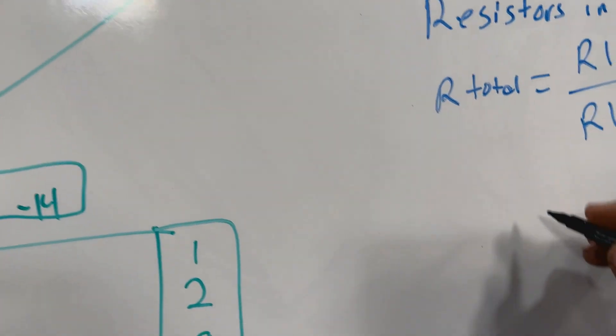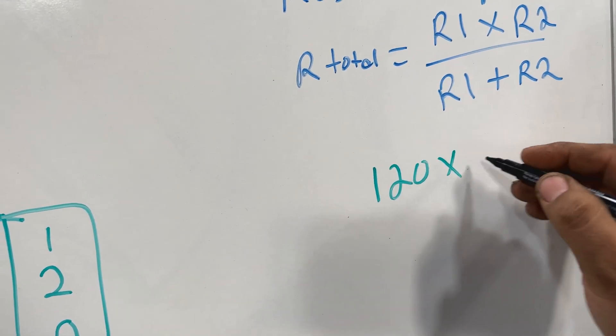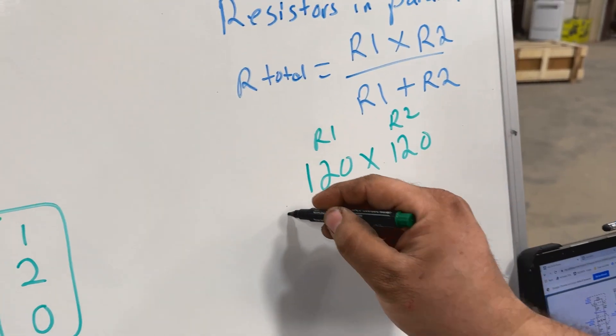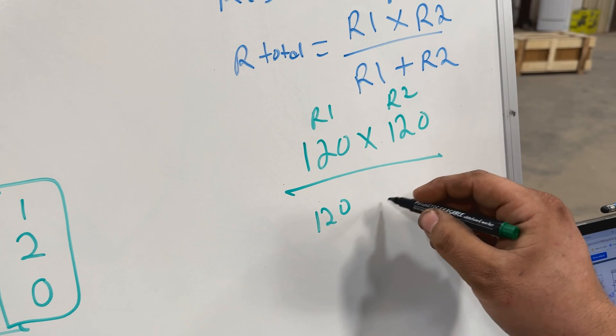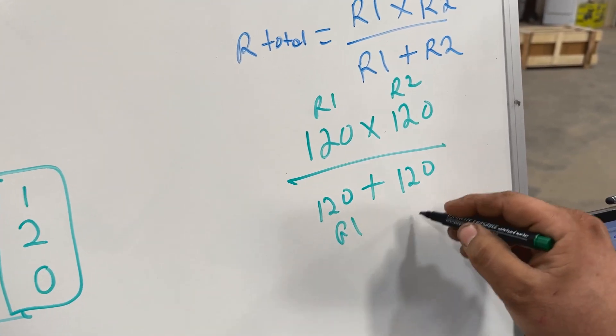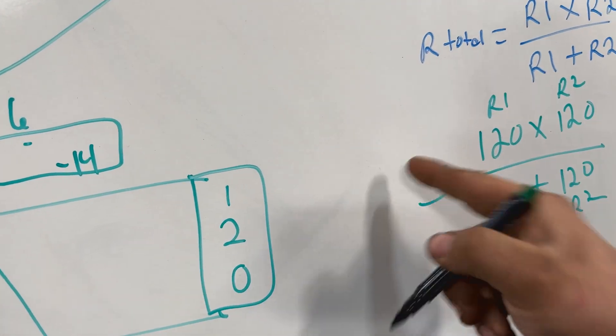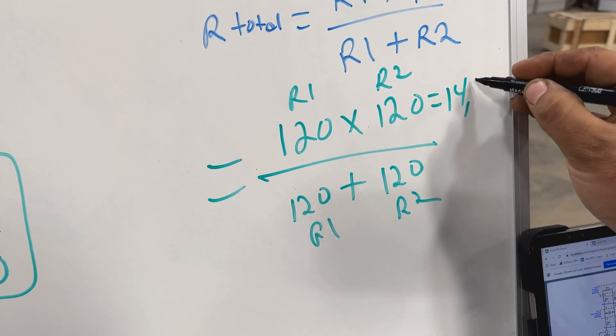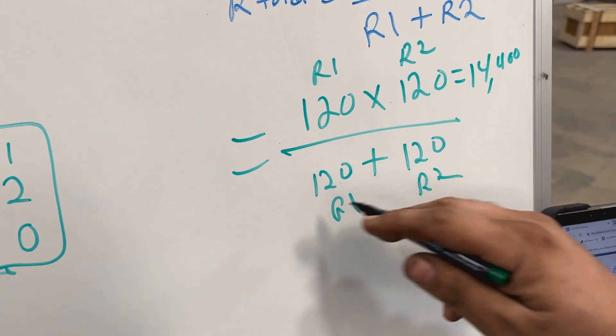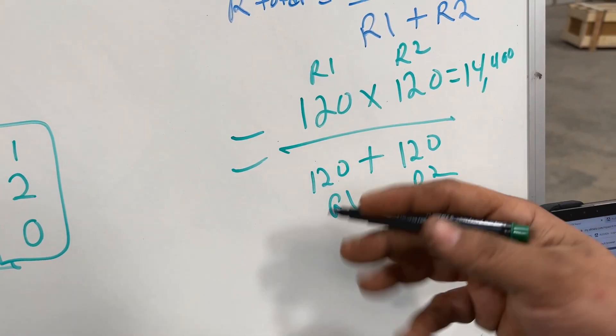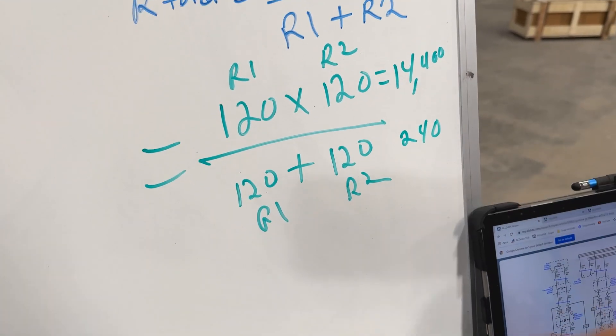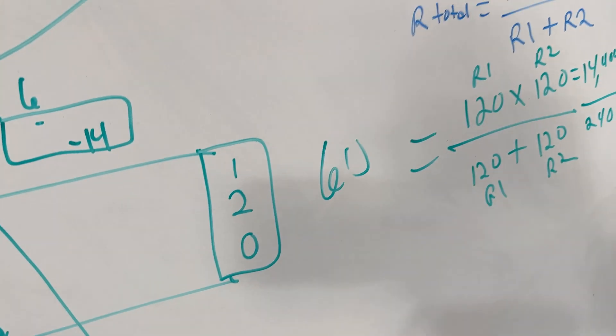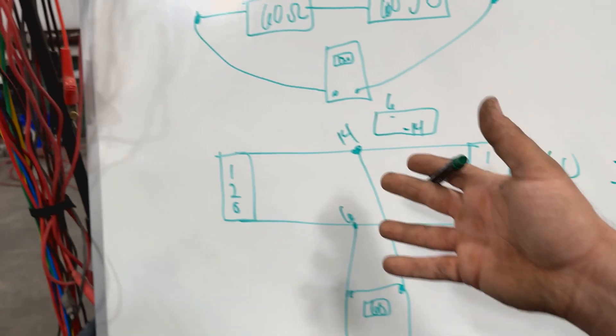So let's just do the math. We have 120 ohm resistor times 120 ohms, R1 and R2. Then we're going to divide it by 120 plus 120, R1 and R2. This is going to give us the total. So we come over here, 120 times 120 equals 14,400. Then we're going to get this measurement over here, 120 plus 120, that's 240. So all we have to do is divide this number by that number. What does that give us? It gives us 60 ohms. That's how you calculate resistance in parallel and also in series.